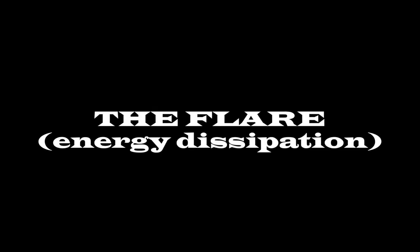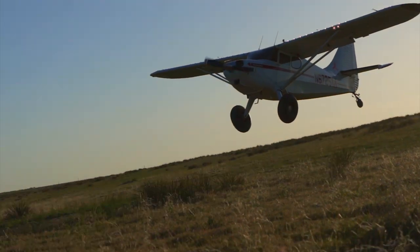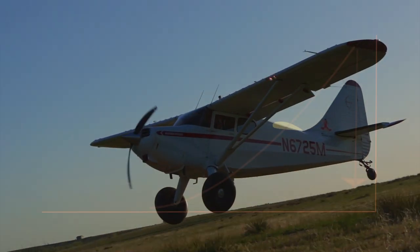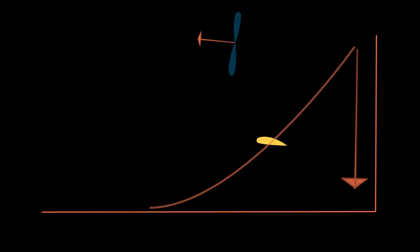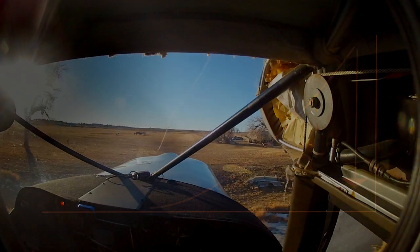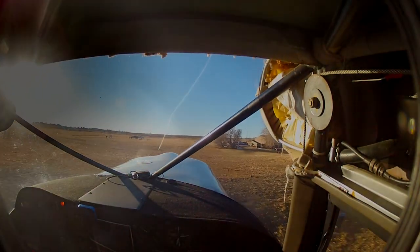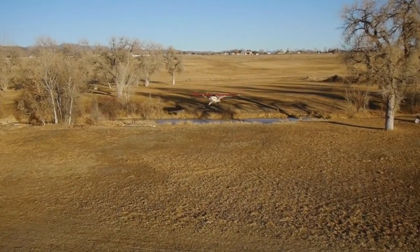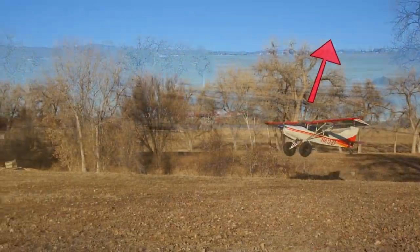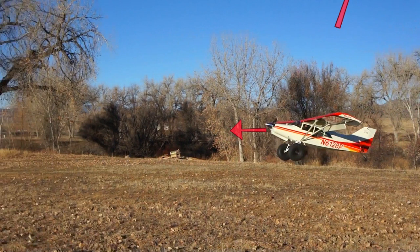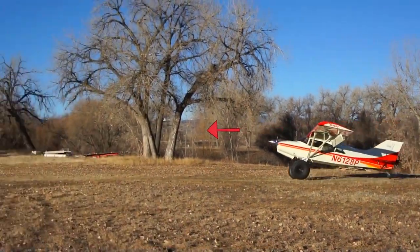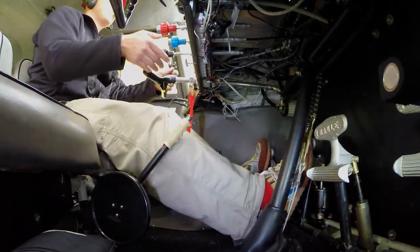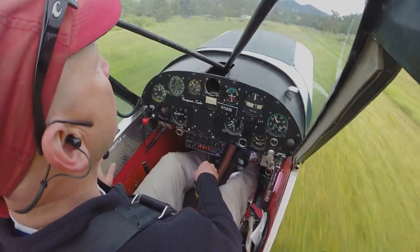The first segment is the flare. If you have executed a steep stabilized approach as described in our previous video, then what you are really doing for the flare is arresting your vertical speed and hopefully arriving at the ground at your least possible forward airspeed. This is really about timing and practice.